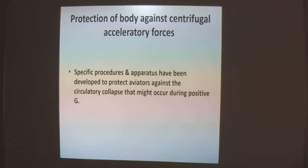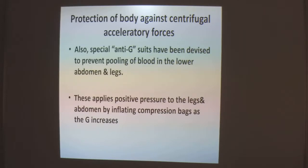How can the body be protected against centrifugal acceleratory forces? Specific procedures and apparatus have been developed to protect aviators against circulatory collapse that might occur during positive G. Special anti-G suits have been devised to prevent the pulling of blood into the lower abdomen and legs. This device applies positive pressure to the legs and abdomen by inflating compression bags as gravity increases.